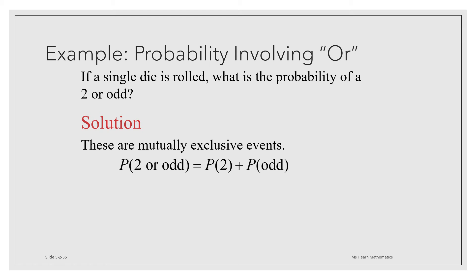In this case, we can just find the probability of 2 and add to that the probability of getting an odd and not worry about subtracting off any overlap. So that's going to be 1 sixth plus 3 sixths, which is 4 sixths, which reduces to 2 thirds.